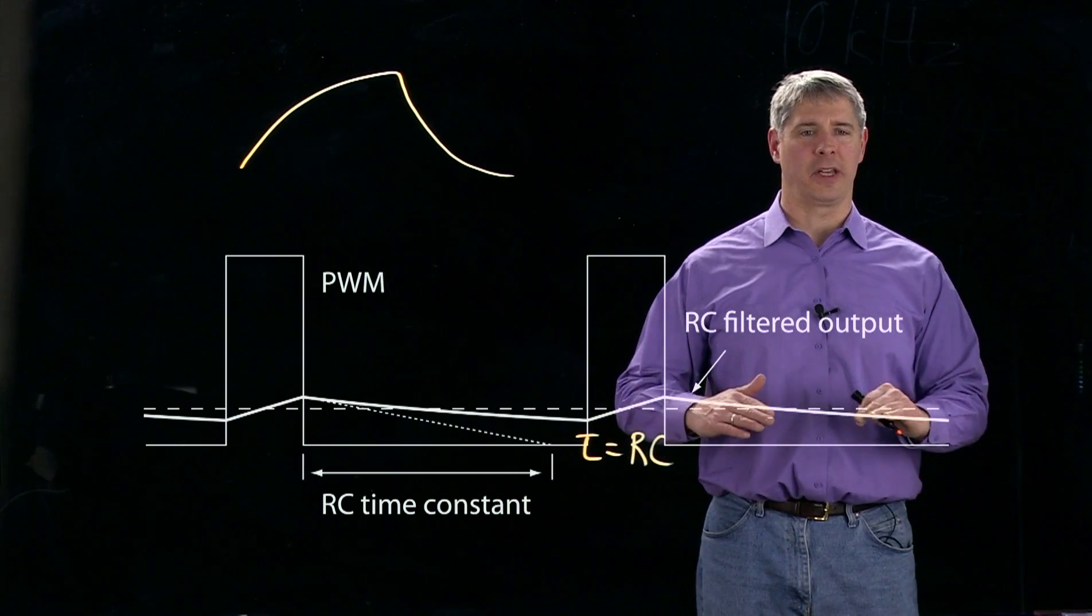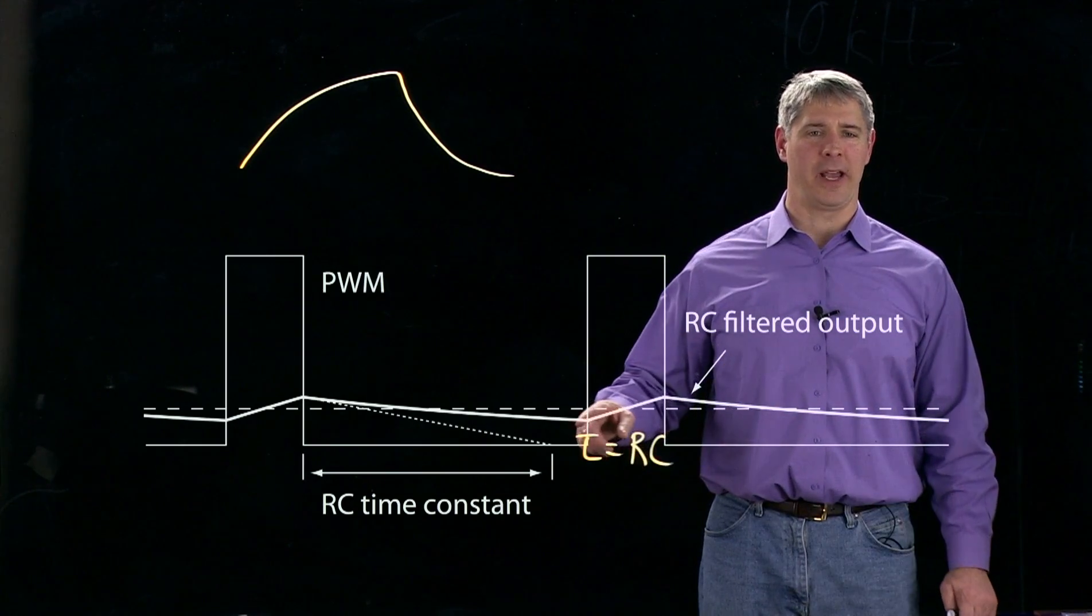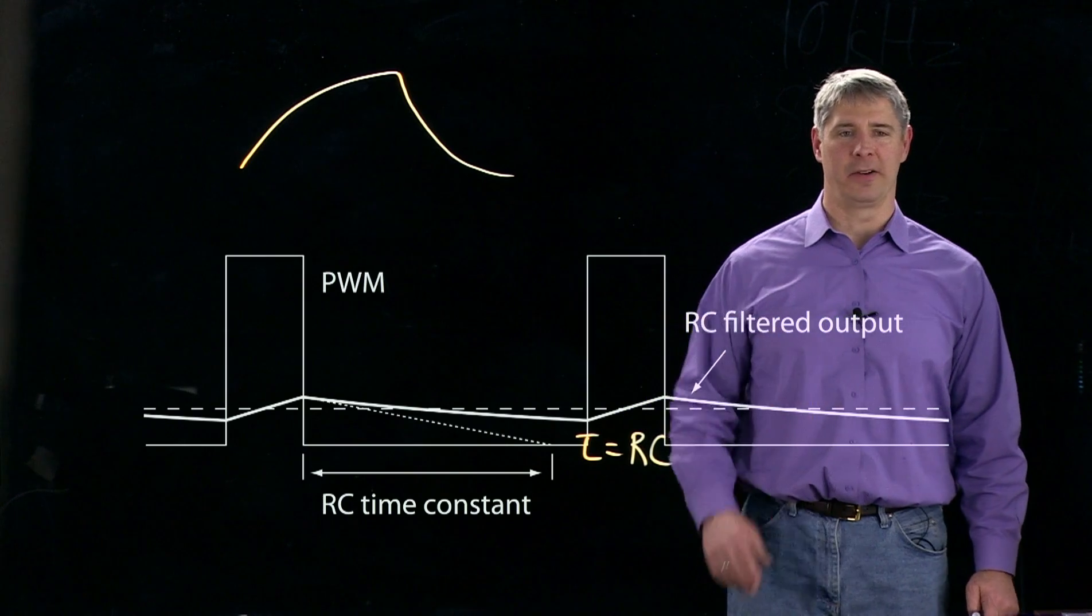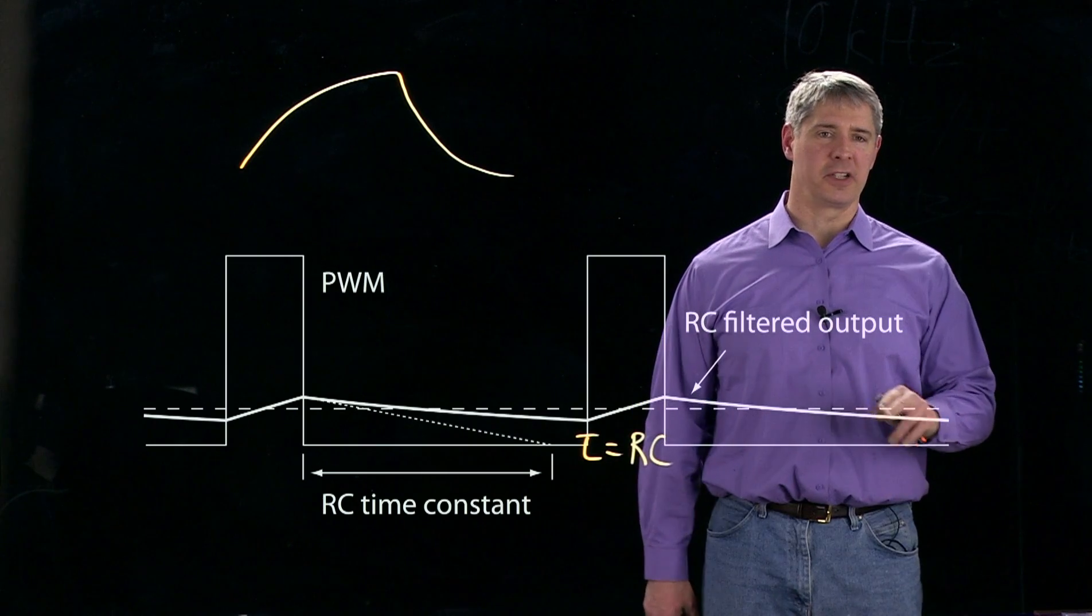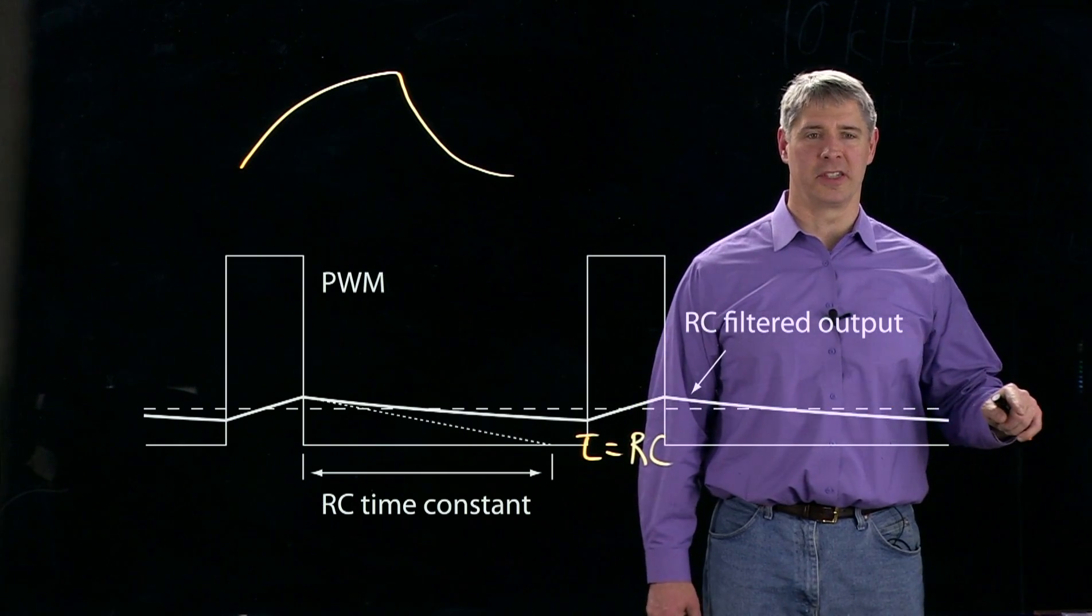So in effect, we get this filtered output. But in reality, we get something that jitters up and down around it. And if this time constant is very long, then the jitter is very small. It has very little time to charge and discharge.